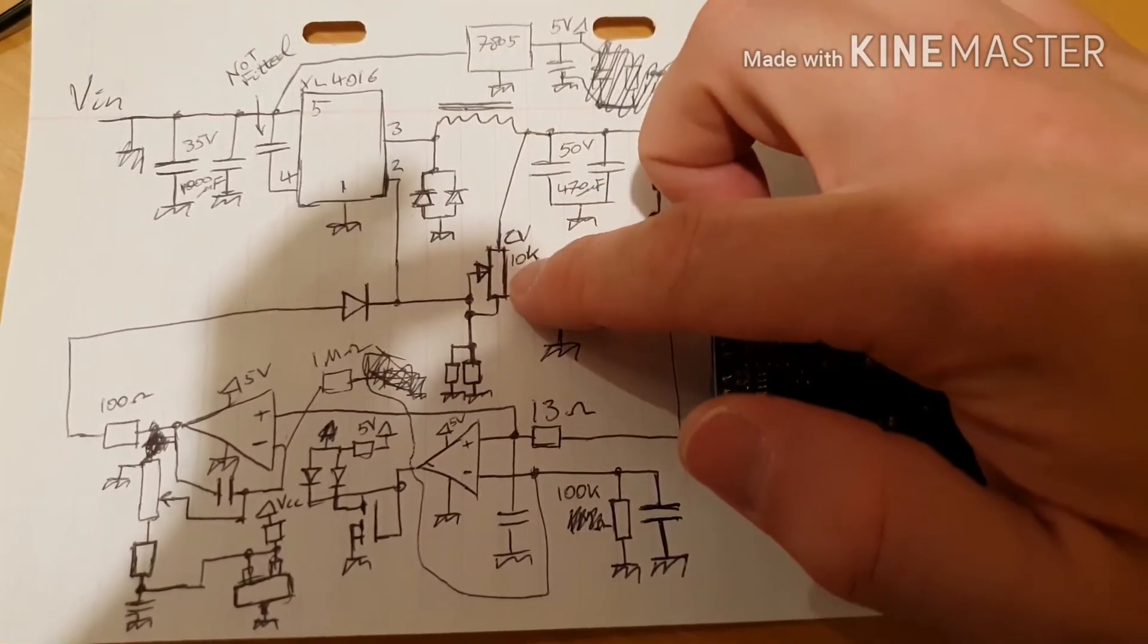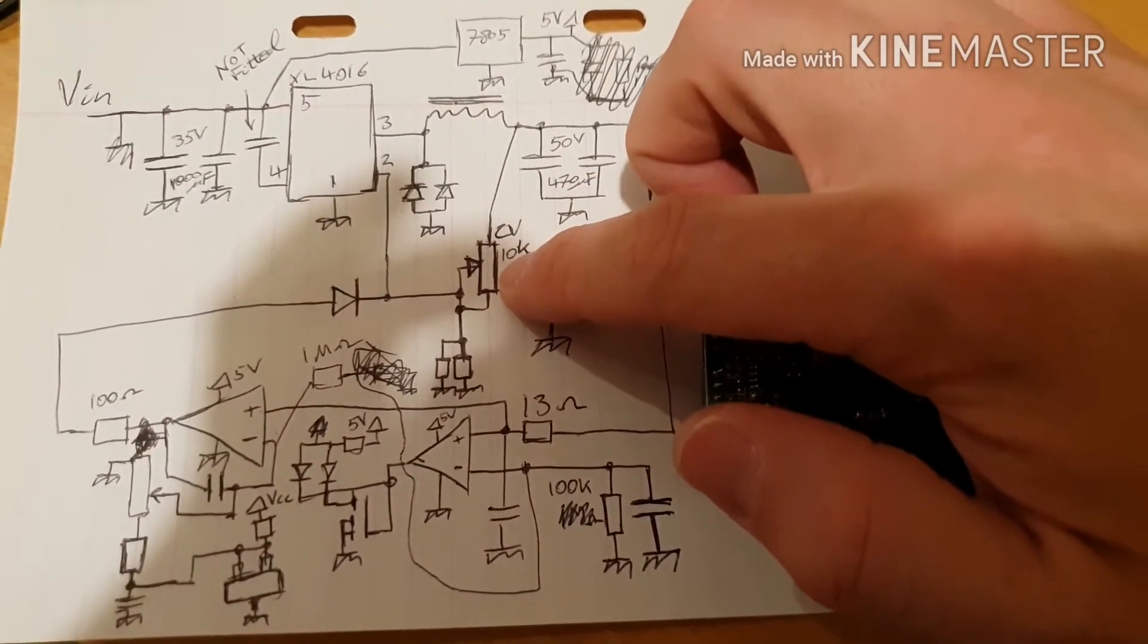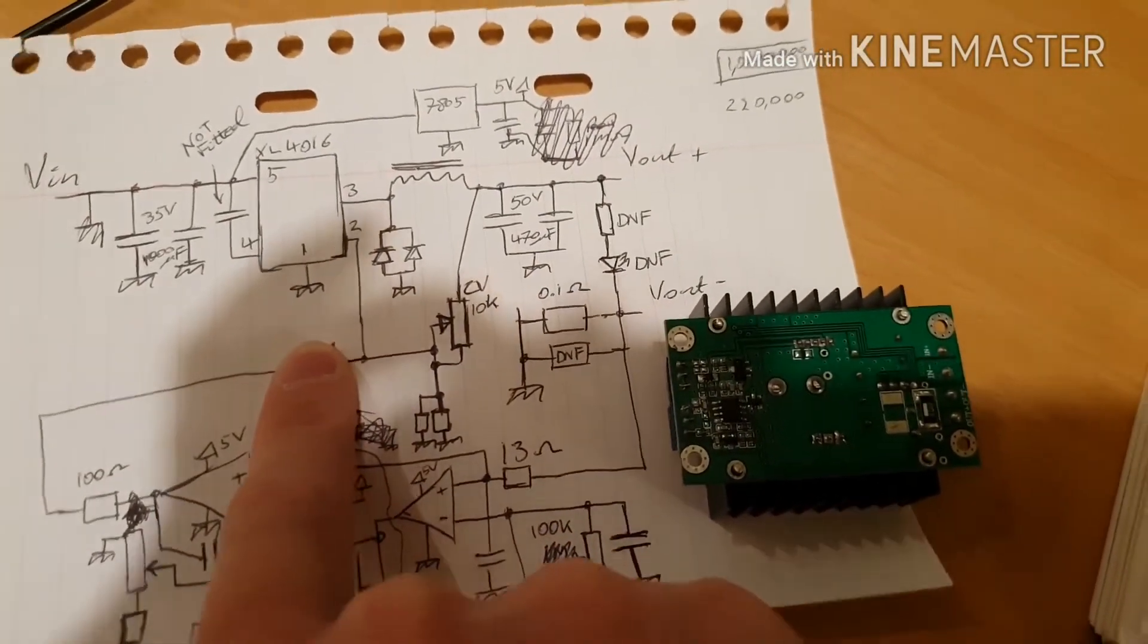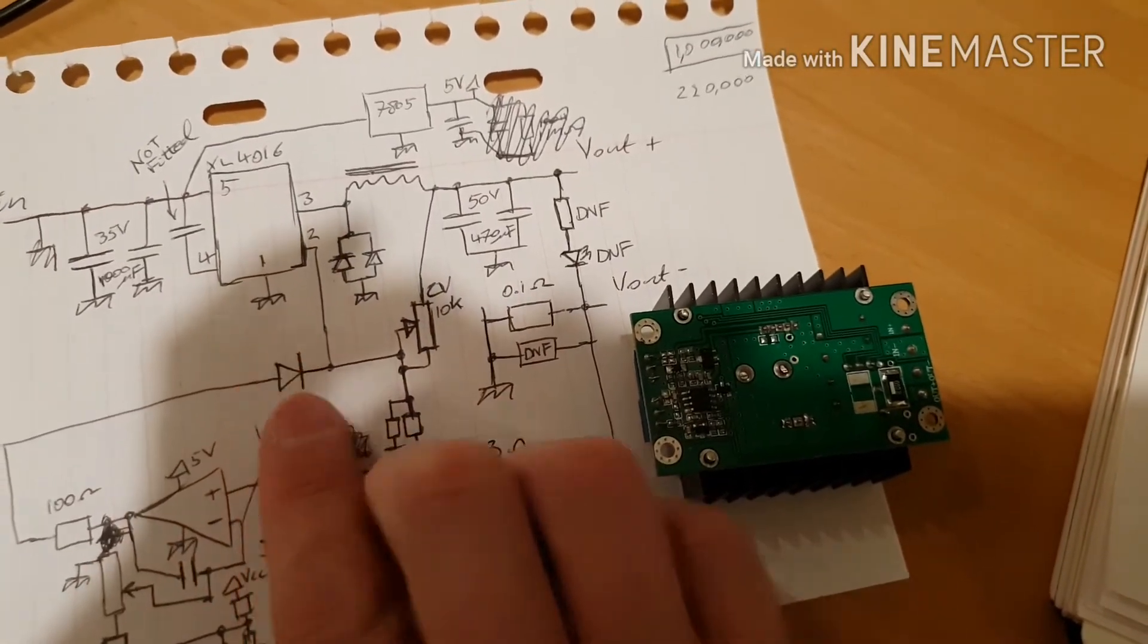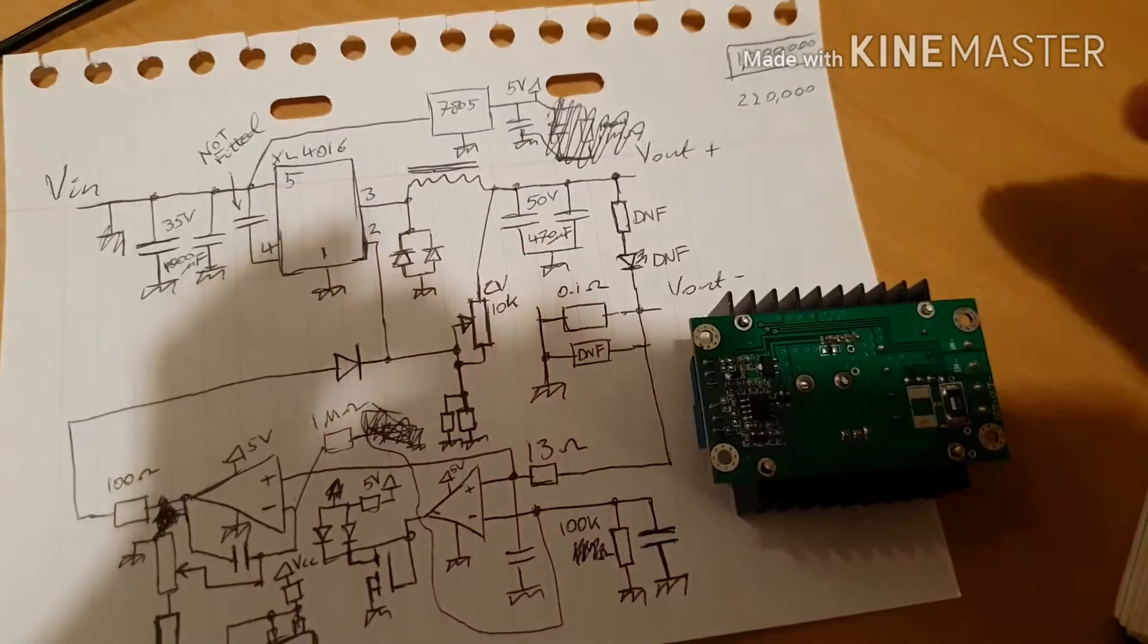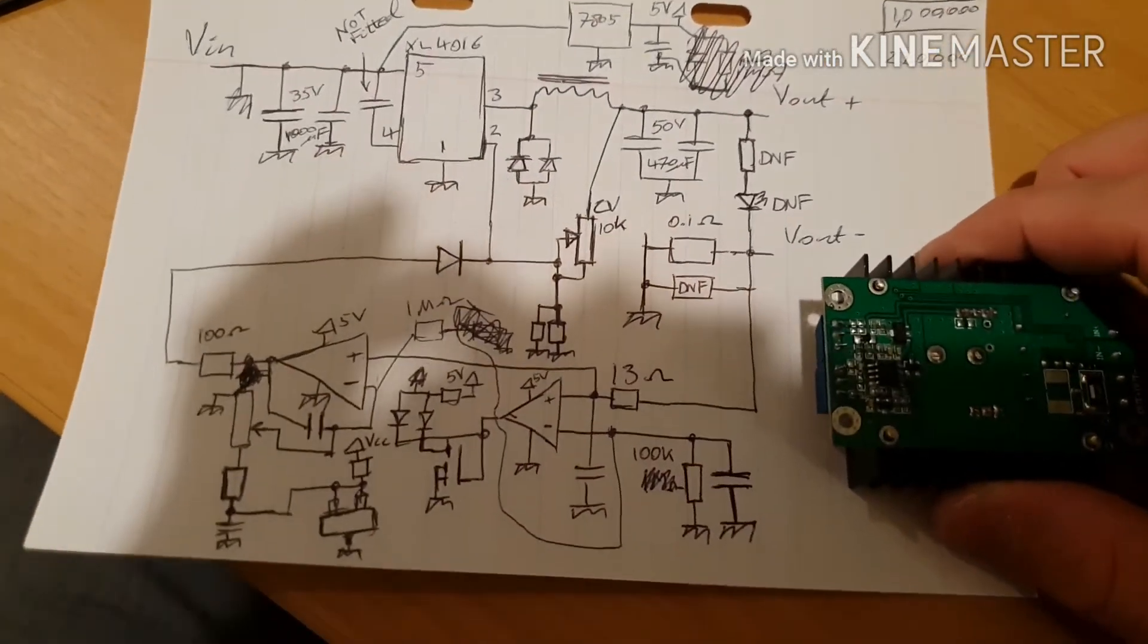You can adjust it using this potentiometer here. So if we ignore this diode, pretend that's out of the circuit for a moment, that is just the circuit from the application note. It's just two resistors that set the feedback voltage into the feedback pin on the chip.